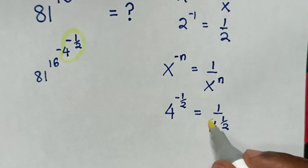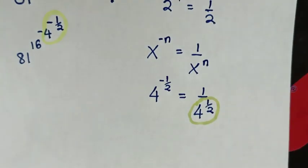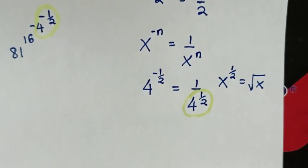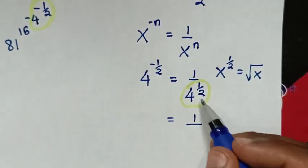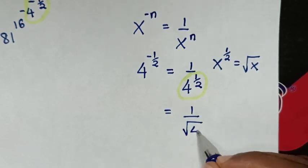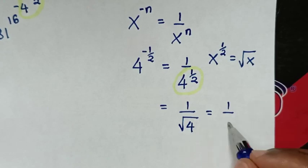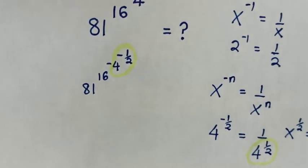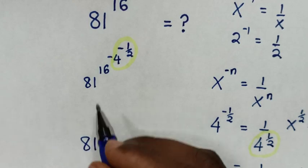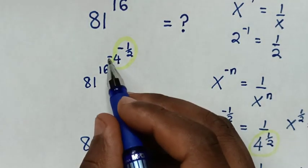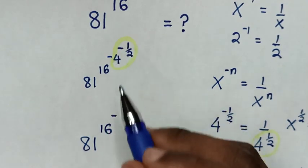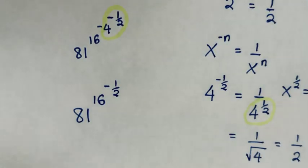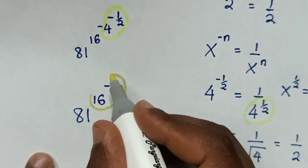Then in the next step, from 4 power of a half, we'll apply the rule that x power of a half is equal to square root of x. So it will be equal to 1 over 4 power of a half, which equals 1 over square root of 4, which is equal to 1 over 2. So we'll substitute this — 4 power of negative a half equals a half — back into the problem. Then it will be 81 power of 16, power of this negative a half. In the next step, we'll solve 16 power of negative a half.